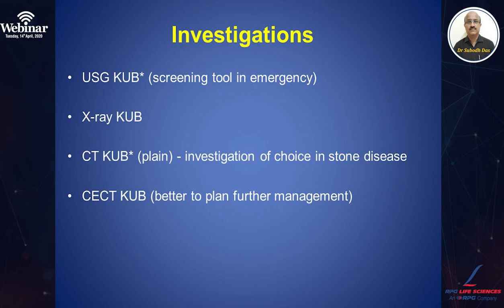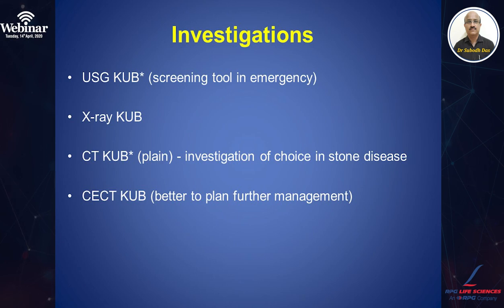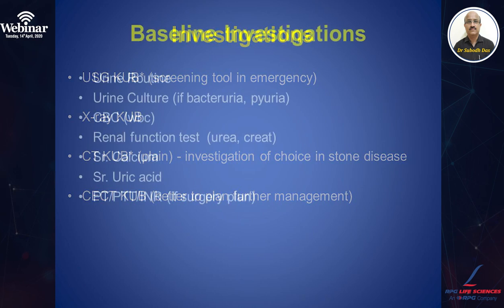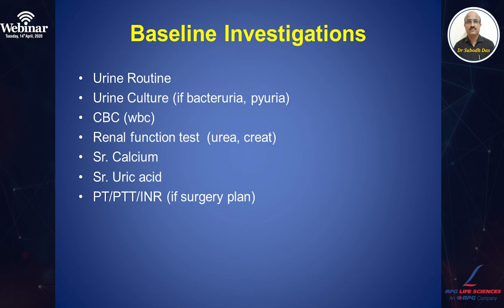How do we investigate a patient with suspected urinary stone disease? Patients with symptoms should be subjected to a routine screening ultrasound in the emergency. X-ray KUB will reveal radio-opaque stones greater than four millimeters. The investigation of choice is plain CT KUB, which invariably reveals the stone and its location. Contrast CT KUB gives functional assessment of the kidneys and can be planned for large renal stones if surgical management is being considered. Baseline investigations include urine routine and microscopy, urine culture, complete blood count, renal function tests for urea and creatinine, serum calcium, serum uric acid, and if surgery is planned, PT and INR.